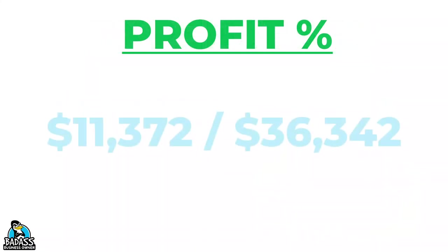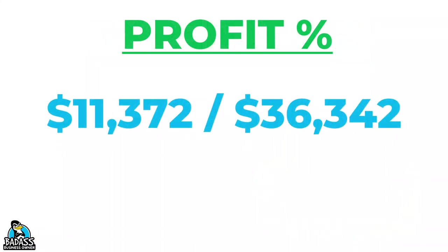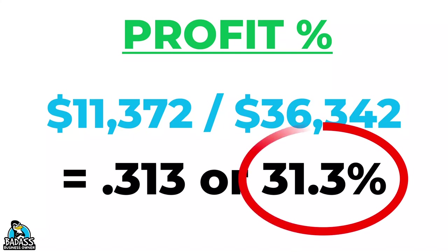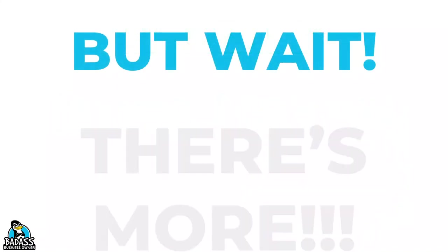Now you know that your cost of goods ran 48% last month and your operational costs were 20.6%. But how much profit did you make? We go back to our P&L and see that our profit was $11,372. We take that and divide it by total sales and we get 0.313 — move that decimal two places and we get 31.3%. Not bad at all; that's a very good profit.